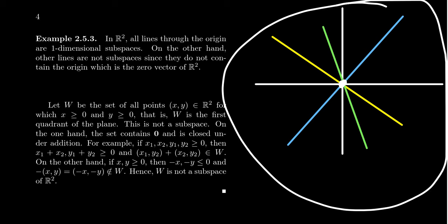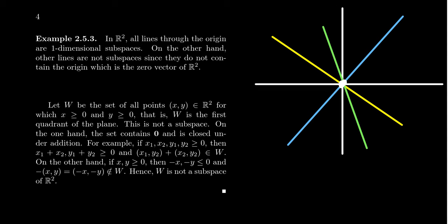And so these would be all of the subspaces of R2. You have R2, you have the zero space, and you have all these lines that pass through the origin. That's going to be it. One could show that.